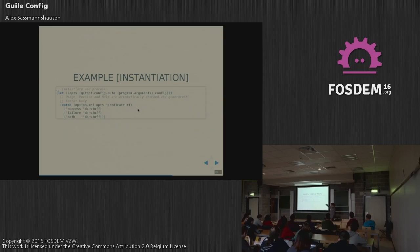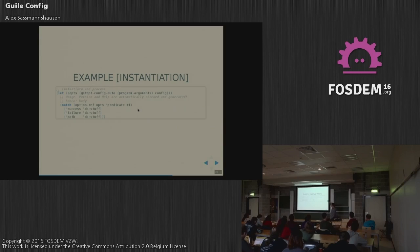And this is an example of it being instantiated. Where before you had getopt-long, now you have getopt-config-auto, which is assigned to ops after passing program arguments and your configuration declaration. But you don't have to worry about checking for version, checking for usage, or checking for help anymore because that's all automatic. And then you can just start doing your stuff, using the same option-ref syntax as with getopt-long, which allows you to check for options being passed in.